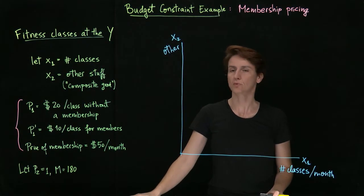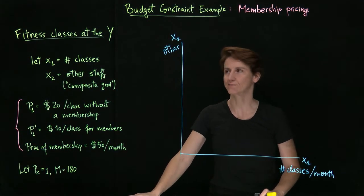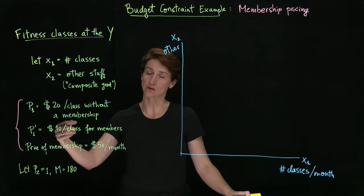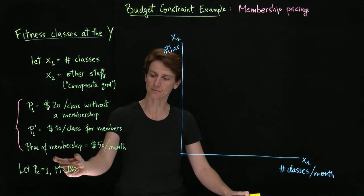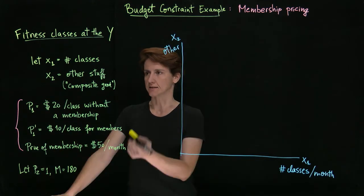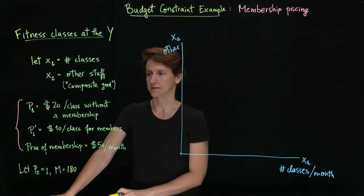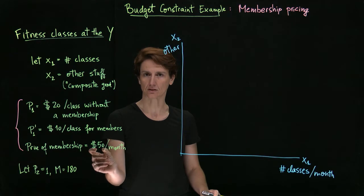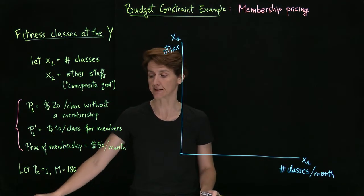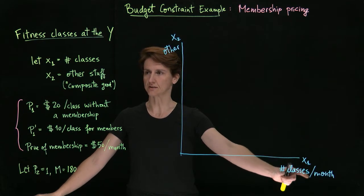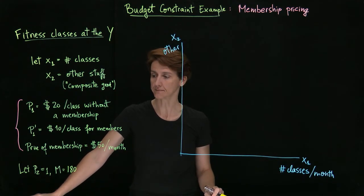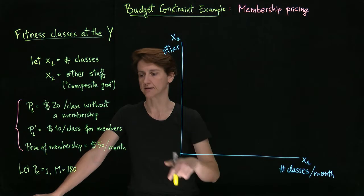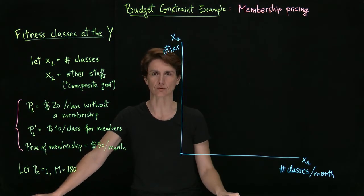Here's another example. Suppose you like to take extreme fitness classes at the Y. Then you're facing two possible pricing structures. One would be you could take classes without being a member, in which case you pay more per class, or you could buy a membership and then pay less per class. In this example, suppose that the non-membership price is twenty dollars per class, and then if you buy a fifty dollar membership, you can buy each class for ten dollars. That is our good of interest in this case—a service, number of classes you take per month. And so on the other axis we're going to put just anything else you spend money on, and so we're going to set that price to one just so we don't have to think about it.